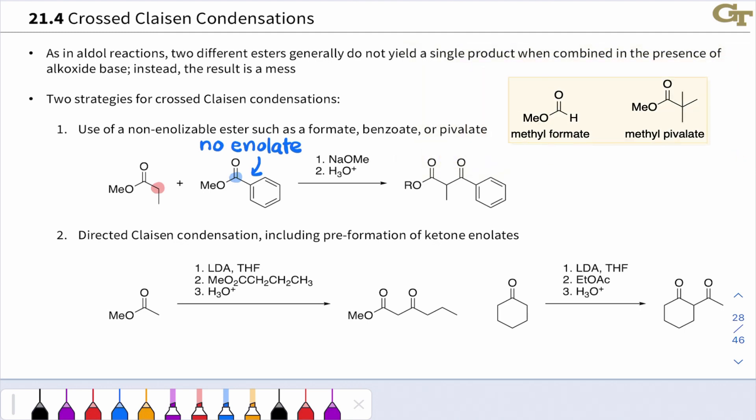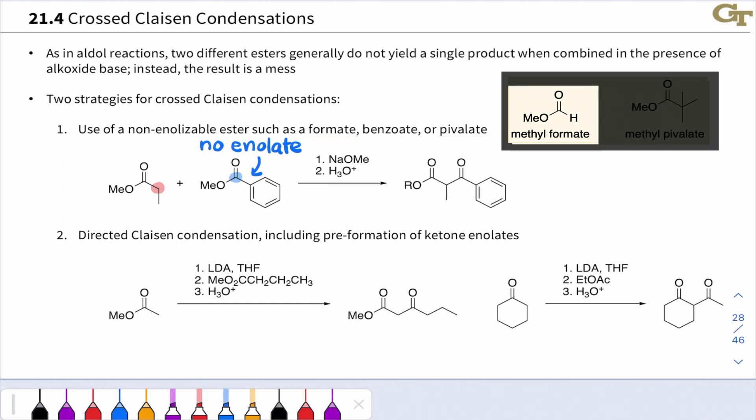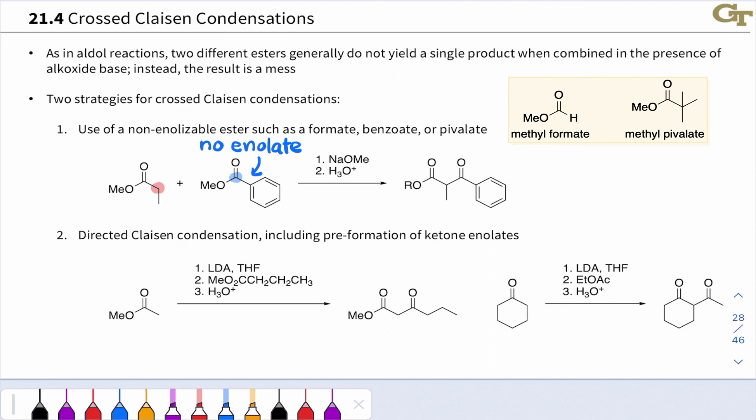Other non-enolizable esters you might see in this role include formate and pivolate. Formate has just an H attached to the carbonyl carbon, so no alpha carbons at all. And pivolate contains a tert-butyl group at that alpha position, so no alpha hydrogens there, no possibility of forming an enolate.